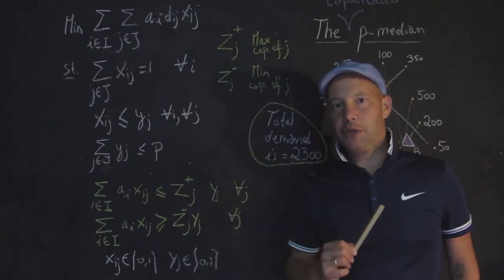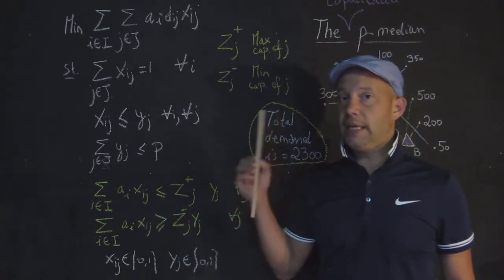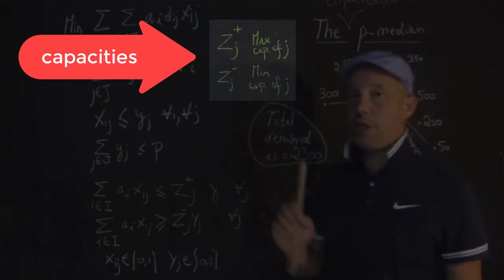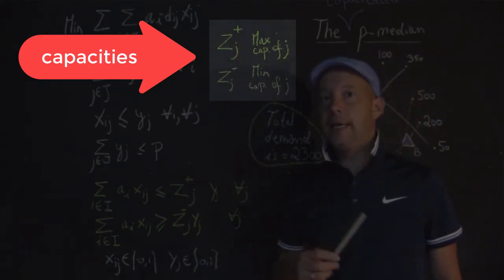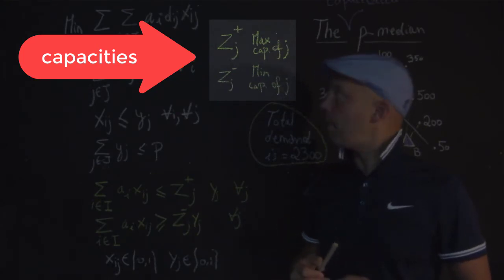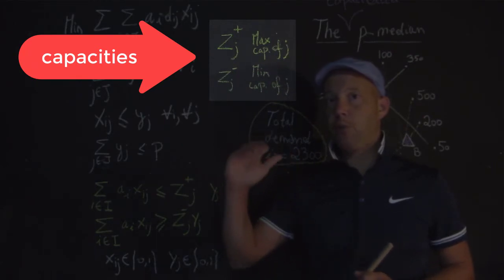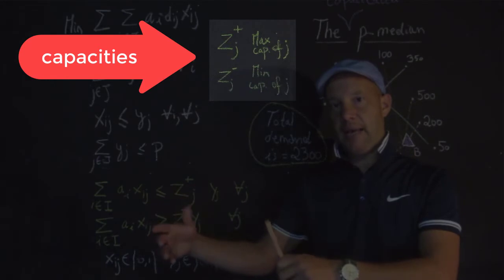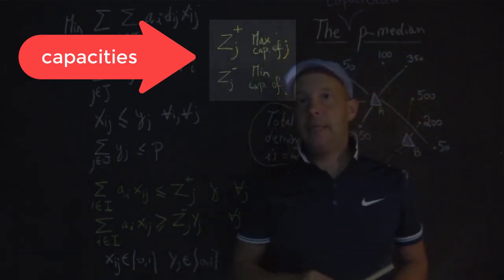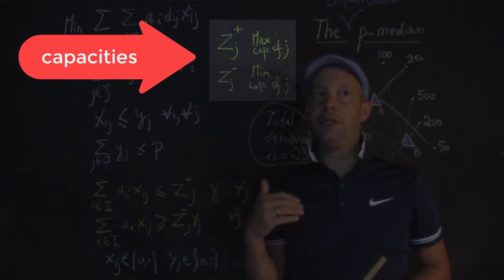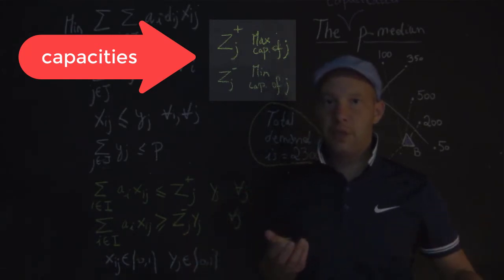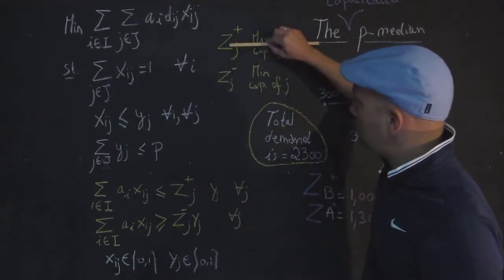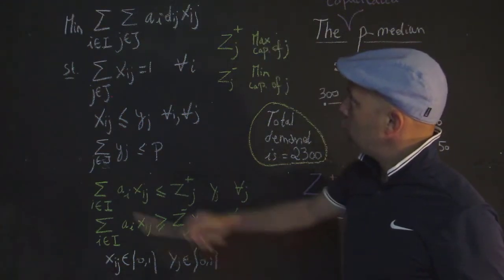As promised, I'm now talking about the formulation of this capacitated p-median. Now, based on the example that we have seen, we introduced essentially a new parameter here, or coefficient if you want, which is z plus j. And that is the maximum capacity a facility can absorb. So for instance, in the case of a school, it may be able to function up to a certain capacity. It's possible to add a little bit of what we call soft capacity, like trailers, for instance, that can be added. So our formulation essentially remains the same.